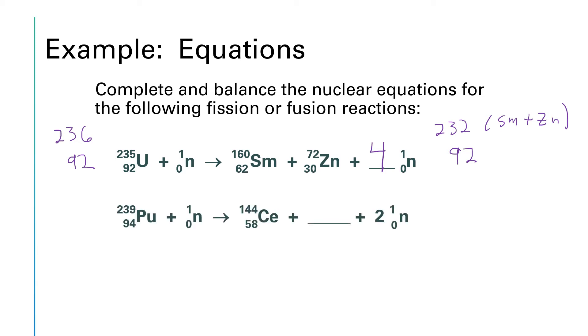We have a plutonium isotope getting hit with a neutron and that's going to make a cerium isotope plus some missing piece we need to find plus two neutrons. So on the left hand side when we add up the mass numbers we have 239 plus 1 which is 240, and when we add up the atomic numbers we have 94 plus 0 which is 94. So those are our sums on the left.